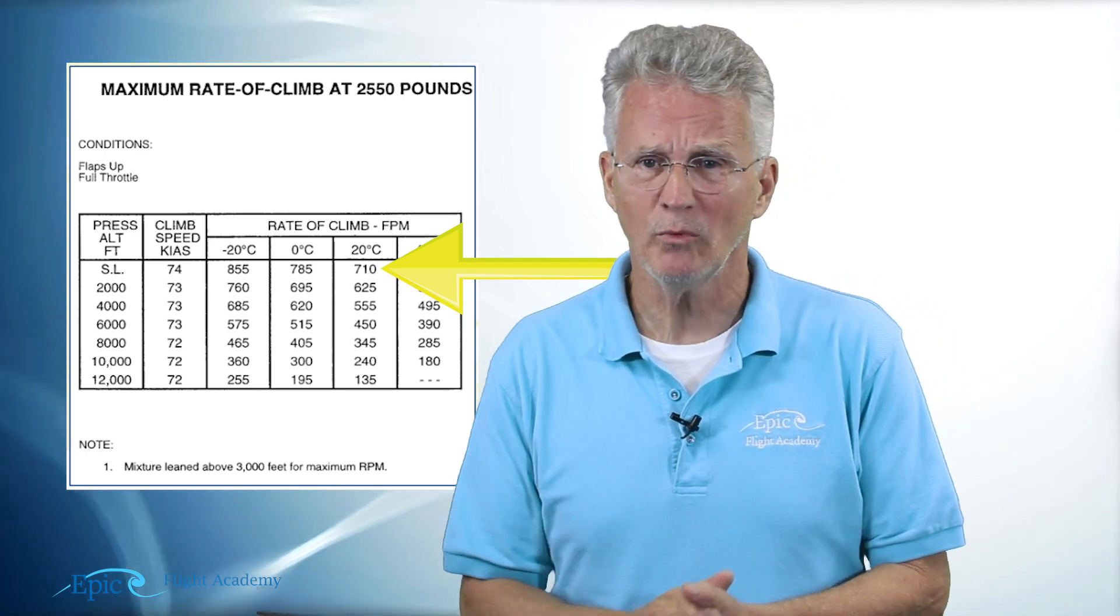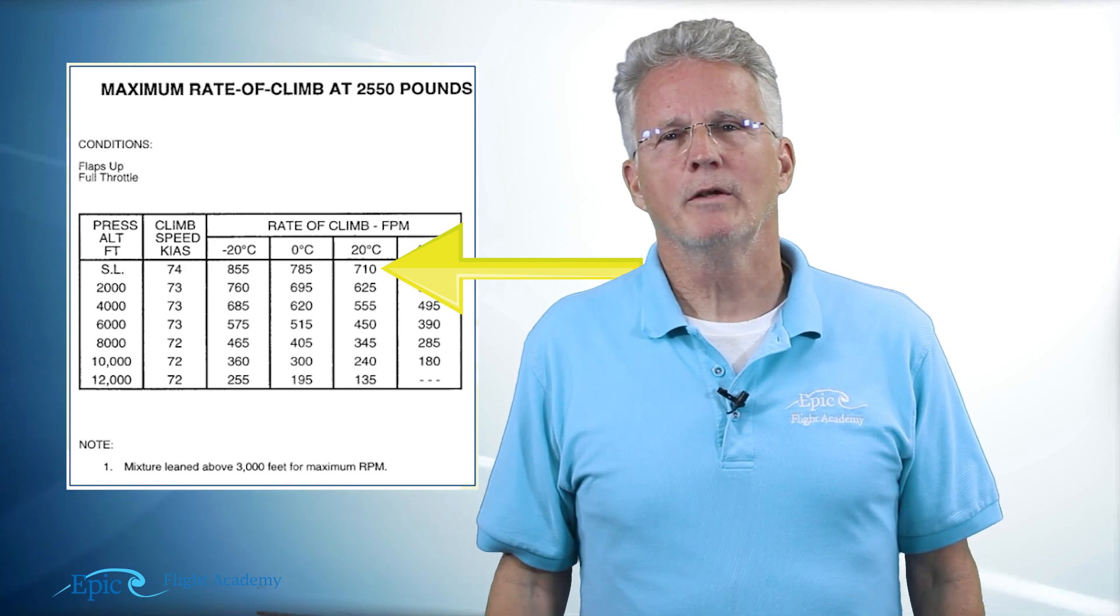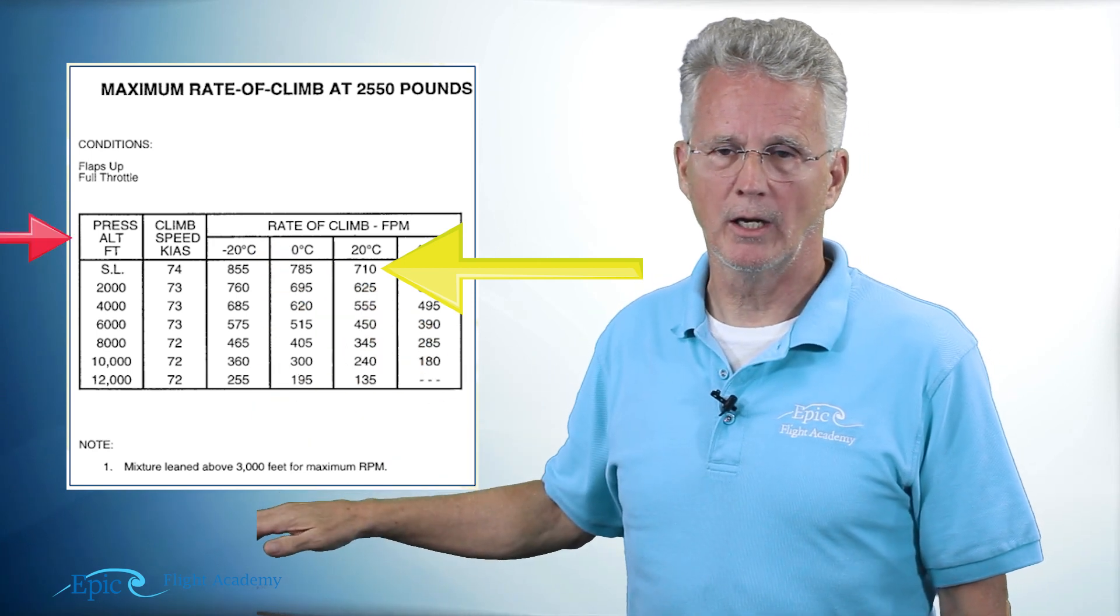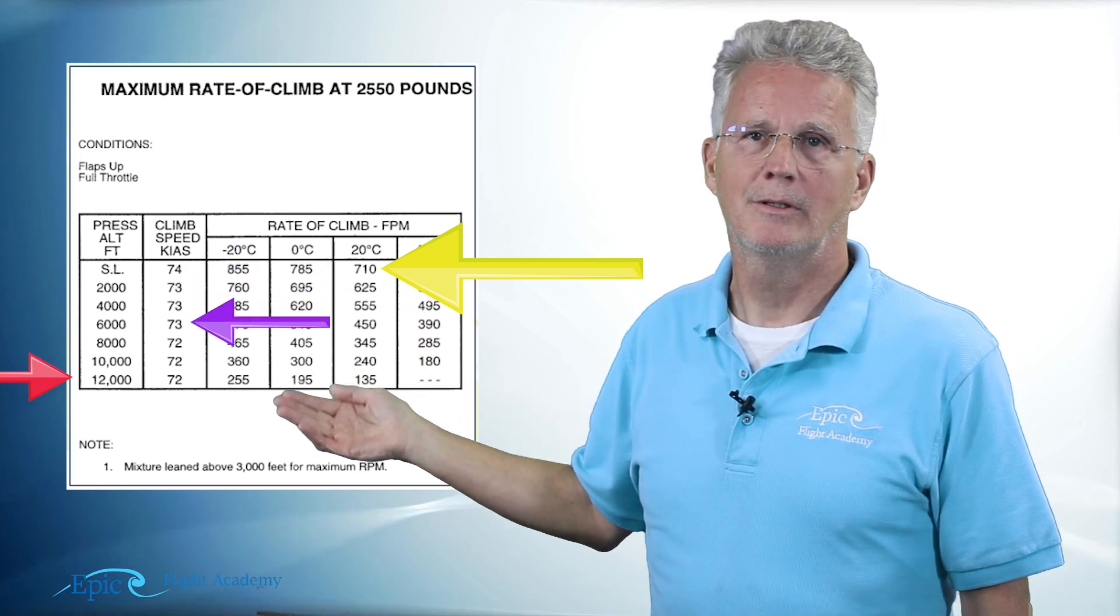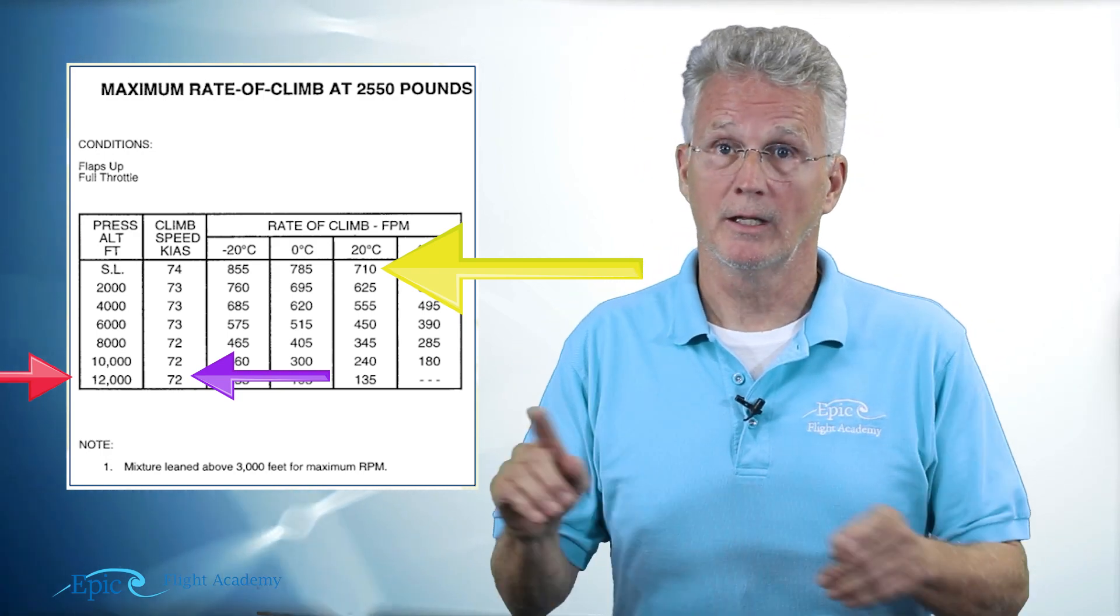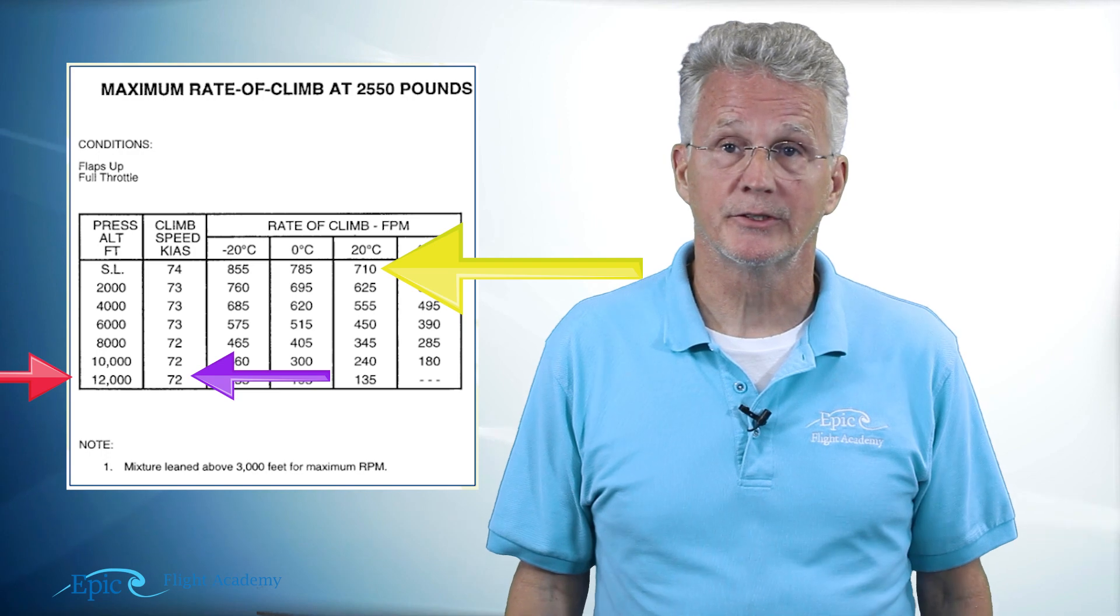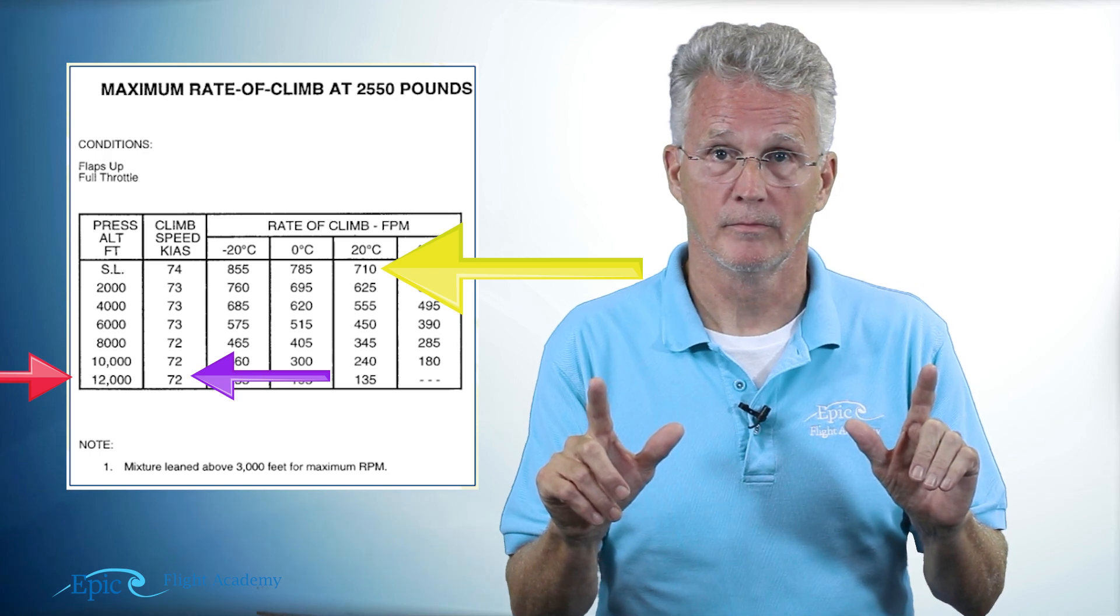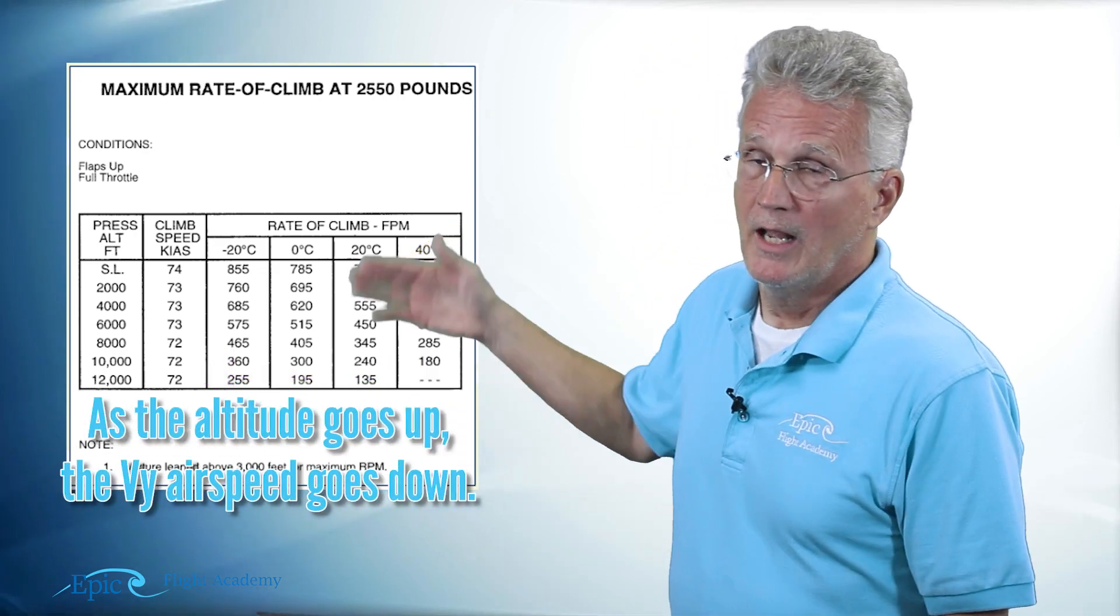Notice one final thing before we continue: as the pressure altitude goes up, the VY climb speed goes down. The reason for this—we'll go into more detail in later videos—but what it means is at higher altitudes there is less excess power available. You might want to review that a little bit more with your flight instructor. Just note for the moment that as my altitude goes up, my VY airspeed goes down.